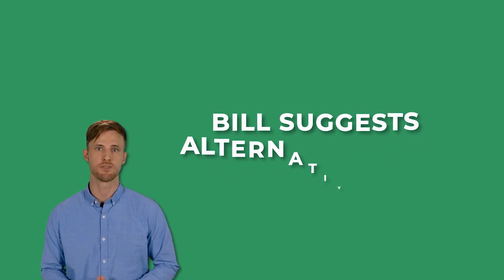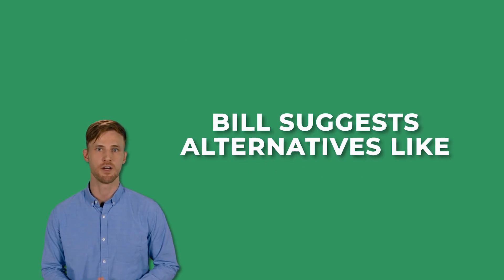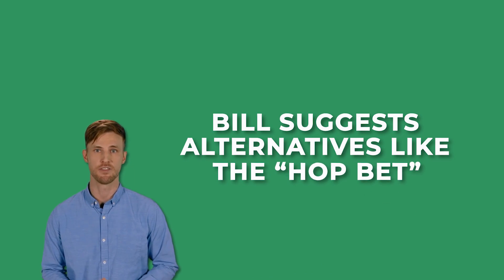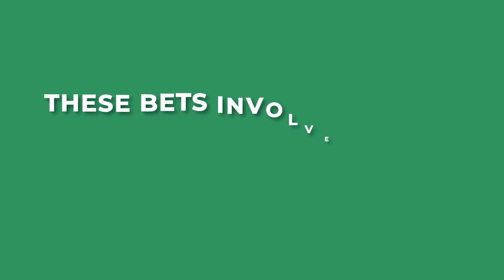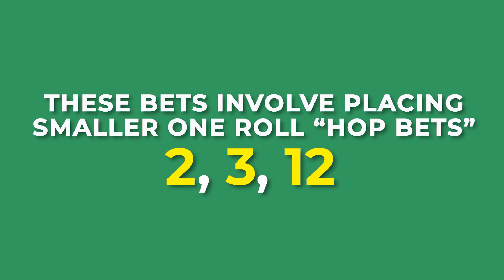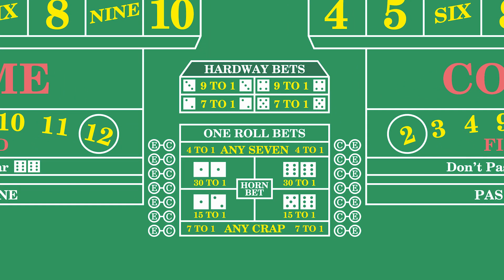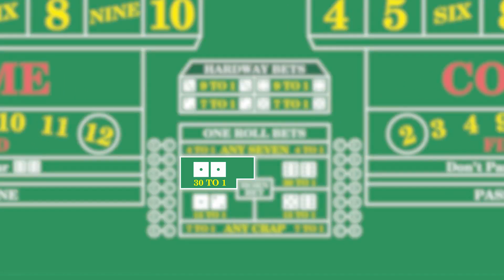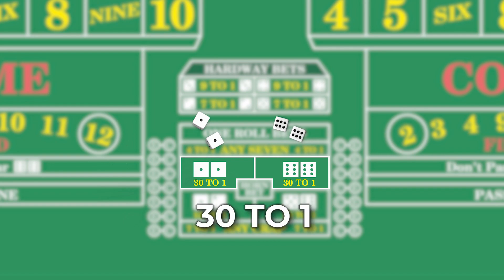However, Bill thinks it's worth noting that there are alternative bets called hop bets that offer the same protection and potentially bigger payouts. These bets involve placing smaller one-roll hop bets on specific numbers like 2, 3, or 12. For example, if you hop 1-1 or 6-6, and a 2 or 12 rolls, you can win with a 30 to 1 payoff, minus the amount you wagered on the losing hop bets. If a 3 is rolled, the payoff is 15 to 1.